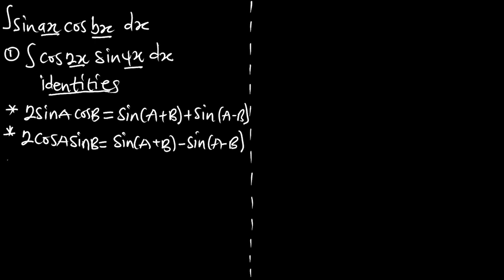The third identity: if we have 2 cos(A) cos(B) in terms of cosine, we are going to get cos(A+B).